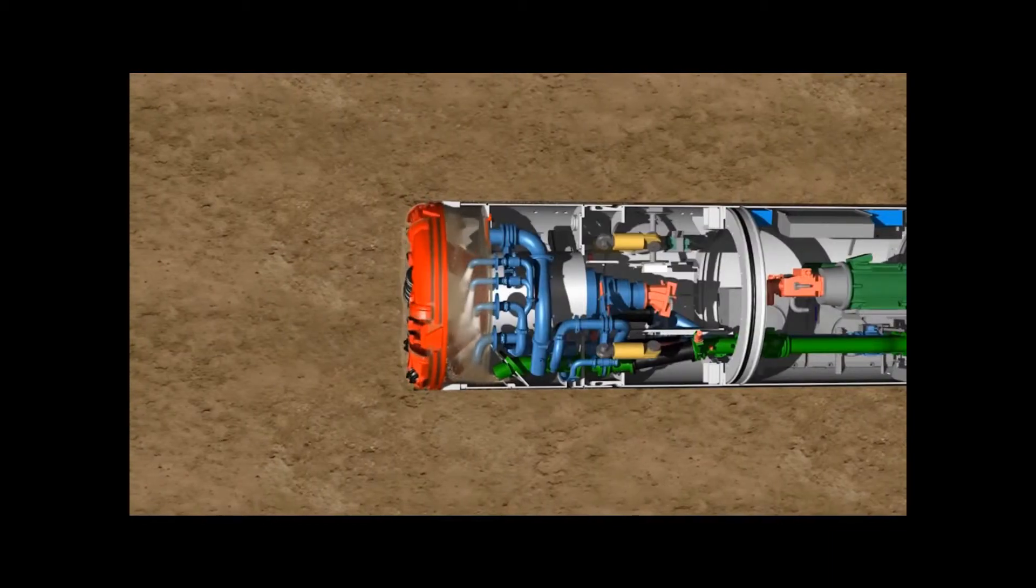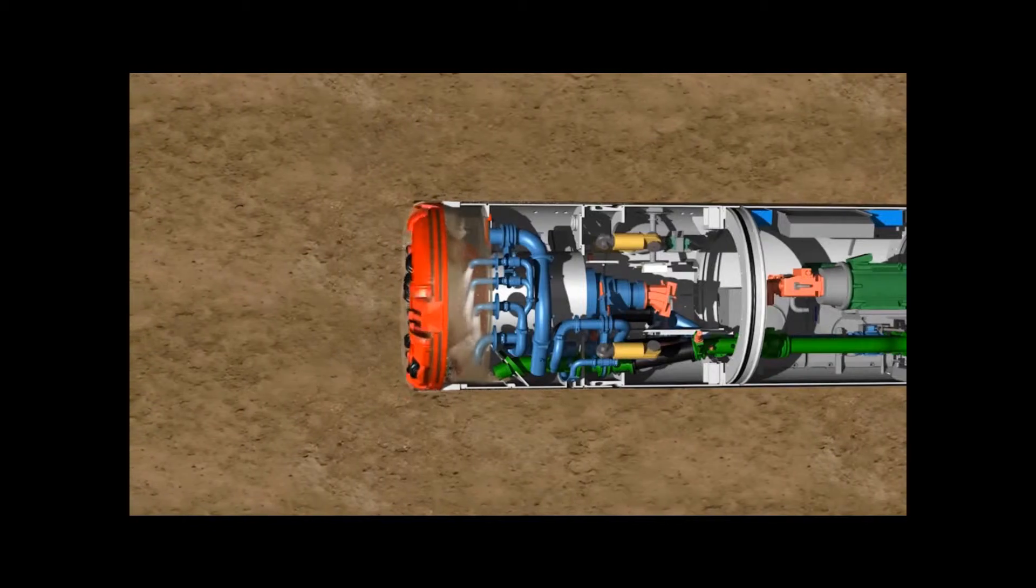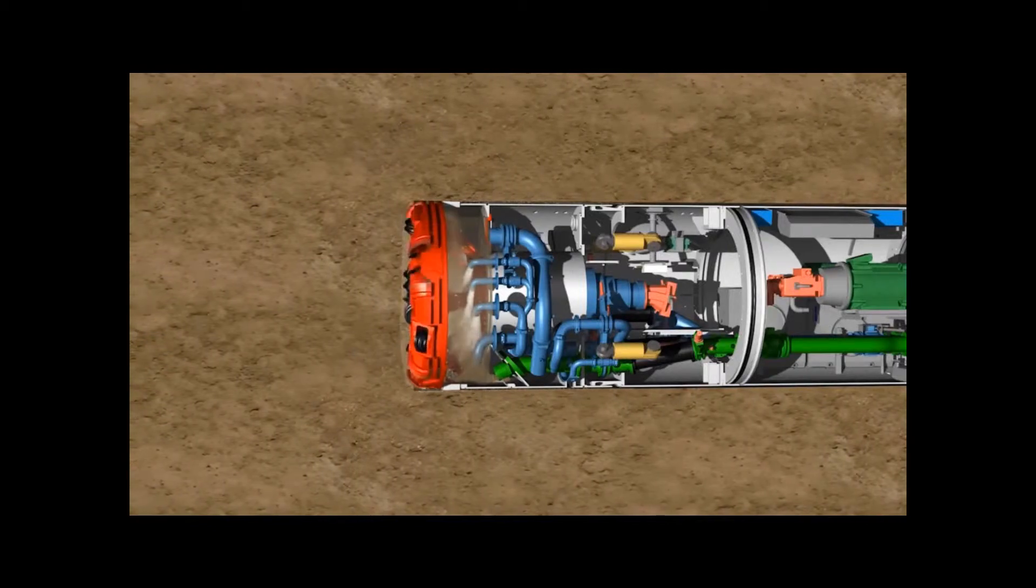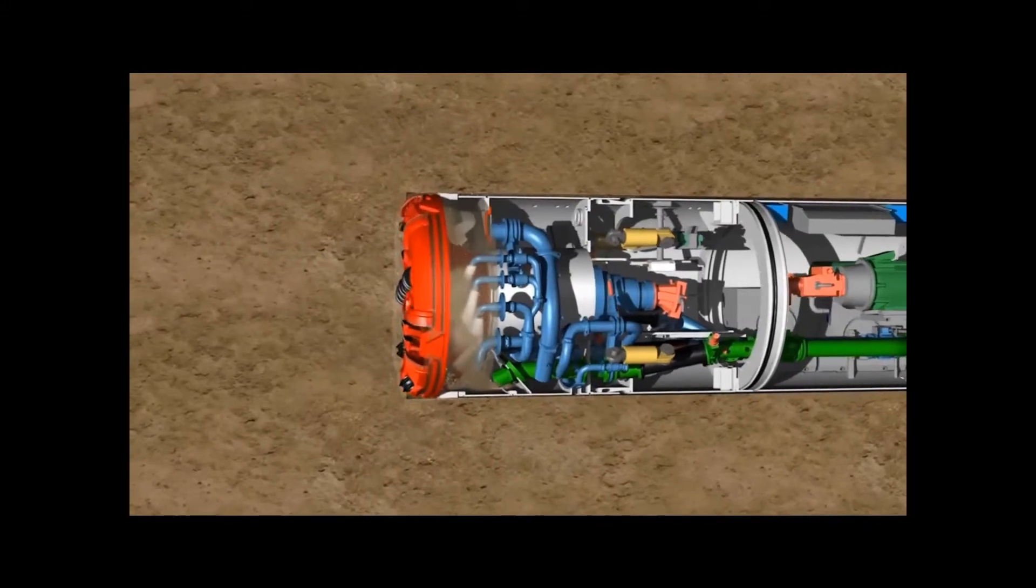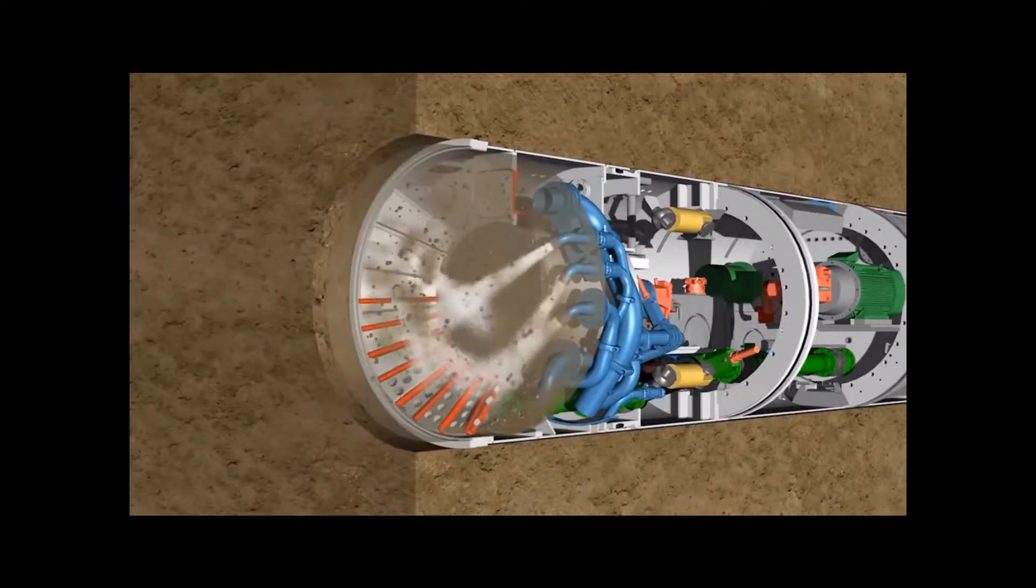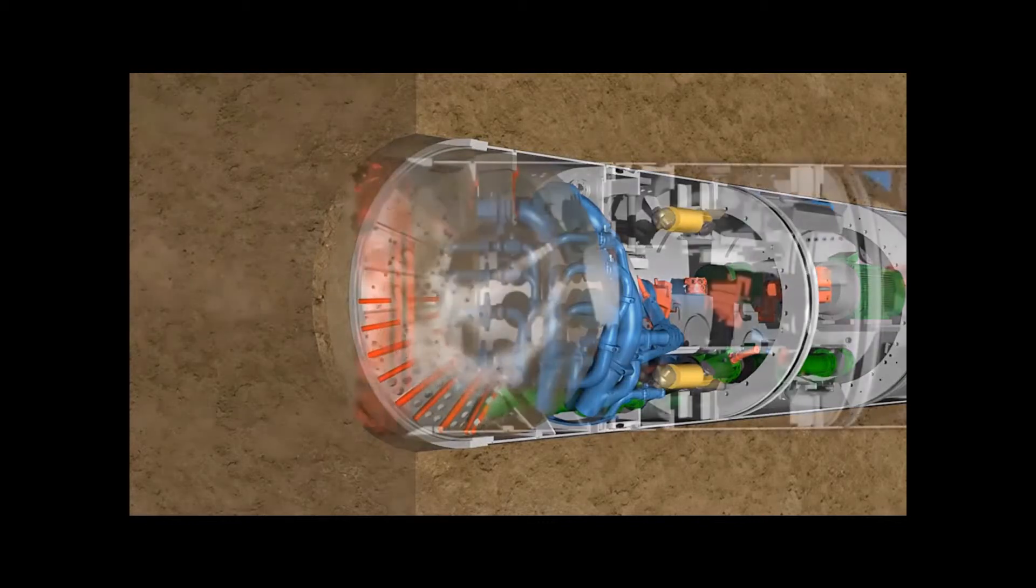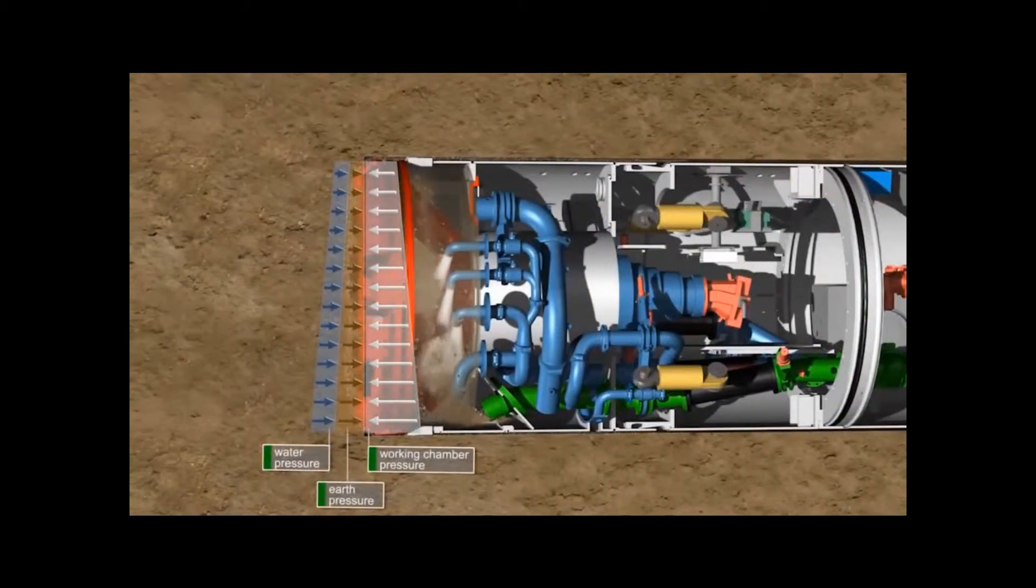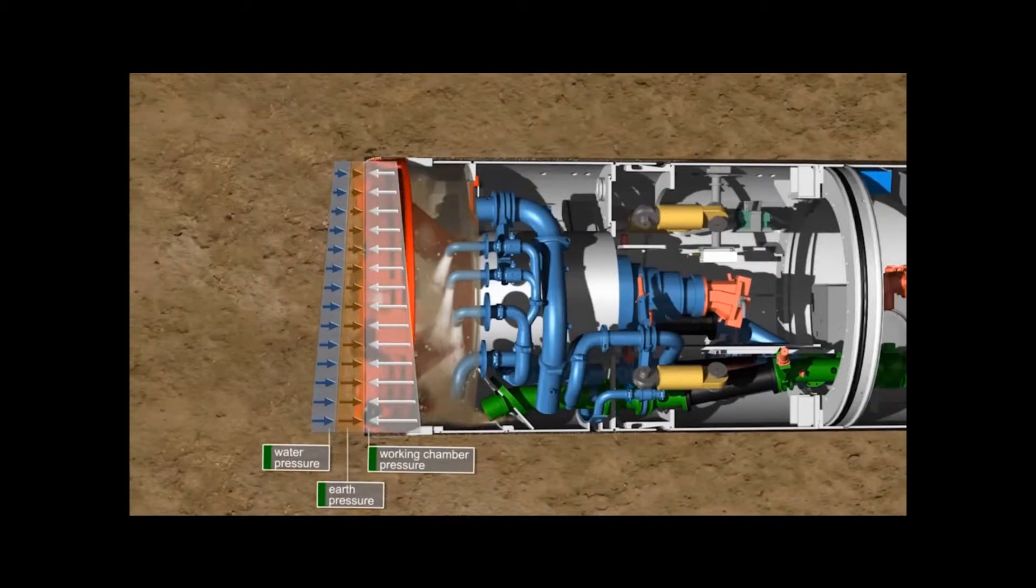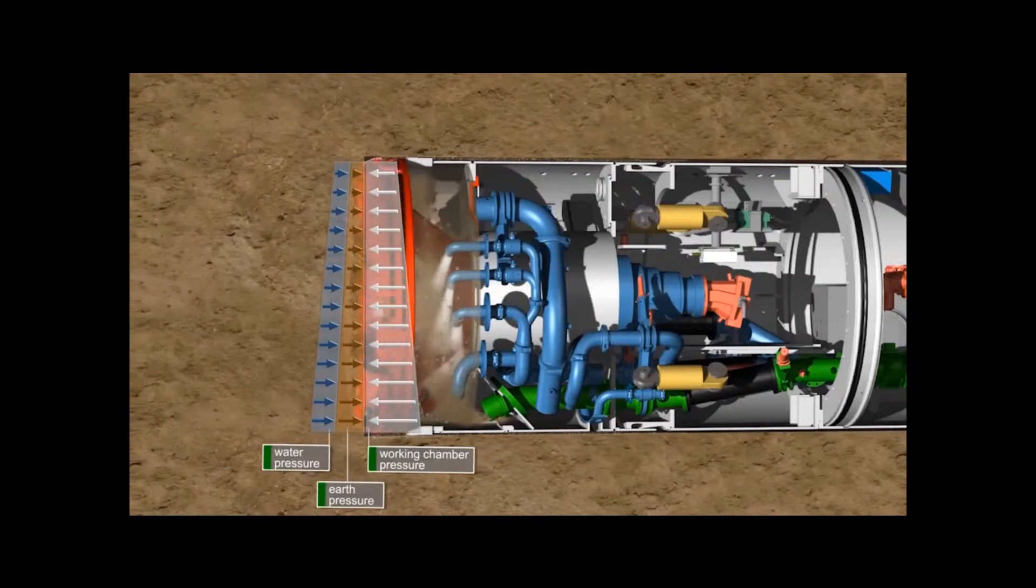When tunneling in homogeneous fine grain soils, the machine works in slurry mode. In this case, only the excavation chamber is completely filled with support fluid. The support fluid, usually water, is piped to the six medium pressure nozzles. The vast narrowing of the nozzle creates a powerful jet which, in cohesive soils in particular, cleans the cutting wheel of clogging and allows high advance rates. The support of the tunnel face is achieved by the force equilibrium of natural soil and ground water pressure on the one side and the counter pressure of the support fluid in the excavation chamber on the other.